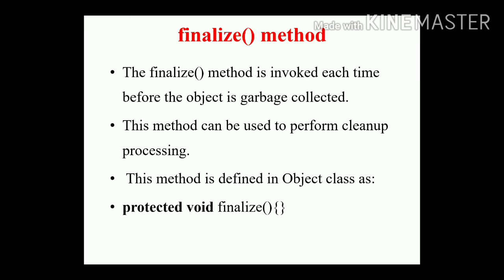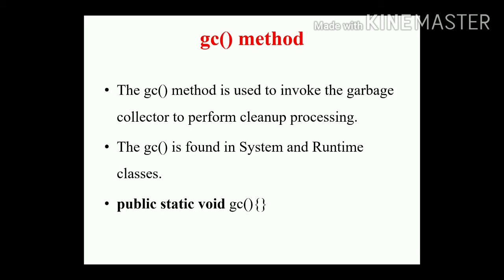The finalize() method is invoked each time before an object is garbage collected. This method can be used to perform cleanup processing. It is defined in the Object class as: protected void finalize(). The second method is the gc() method, which is used to invoke the garbage collector.